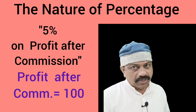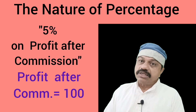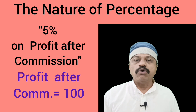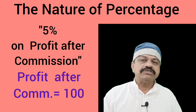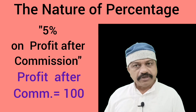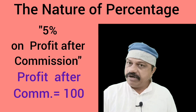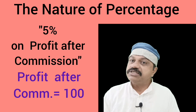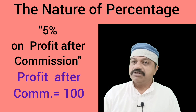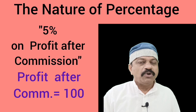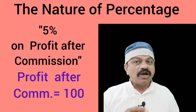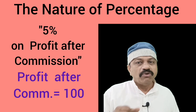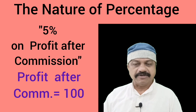Example 11: Manager gets 5% commission on profit after charging such commission. Here, 100 stands for profit after charging such commission. Commission is equal to profit after charging manager's commission multiplied by 5 divided by 100.